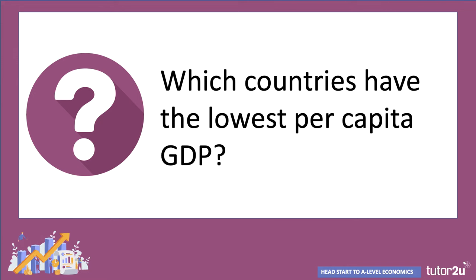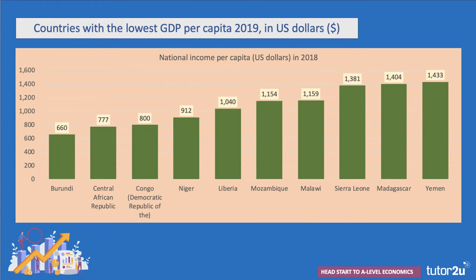Which countries in the world have the lowest per capita income? Going from high to low income per head, we find that these are the countries in 2019 with the lowest per capita income. Four of them have a per capita income of less than a thousand dollars a year: Burundi, Central African Republic, DRC, and Niger. These countries are a world away from the likes of Norway, Switzerland, and Qatar. They have a very high level of extreme poverty, and we'll come back to those aspects in future Head Start videos.